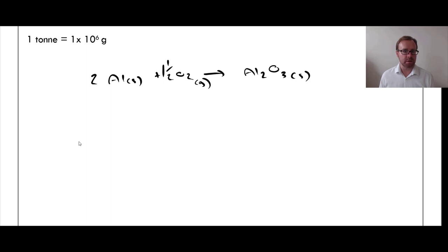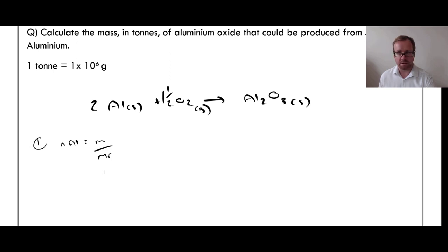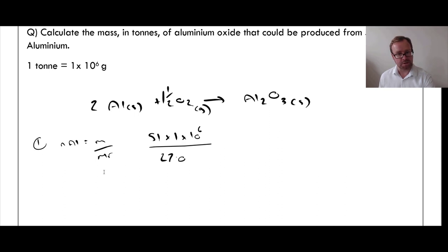So here is the balanced equation. If you're unsure how to form ionic compounds there's a video on that. First, calculate the number of moles of aluminium: N = M / Mr. Converting to grams: 51 × 10⁶ grams divided by the Mr of aluminium, which is 27, gives 1.89 × 10⁶ moles of Al.